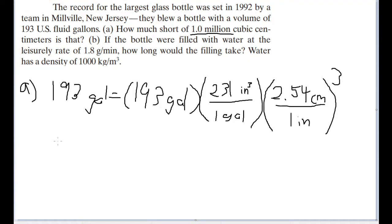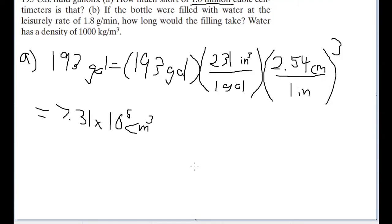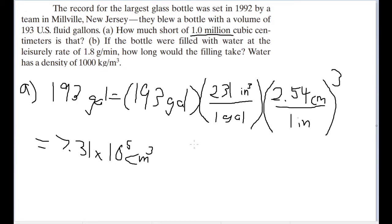And we find that this is equal to about 7.31 times 10 to the fifth power of cubic centimeters. Now that is how many cubic centimeters are in the gallon. That's not what the question asks, however.